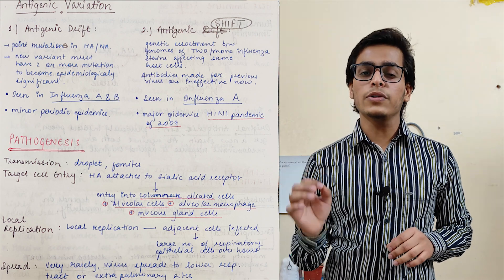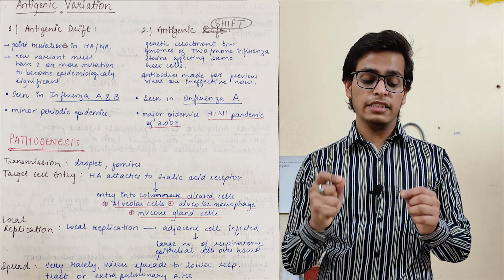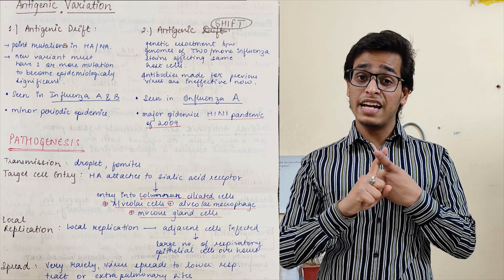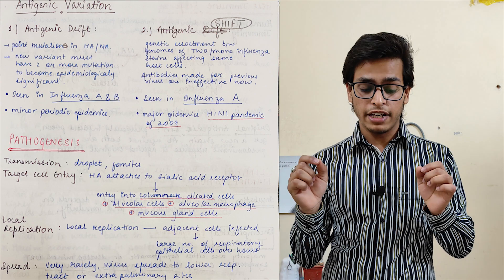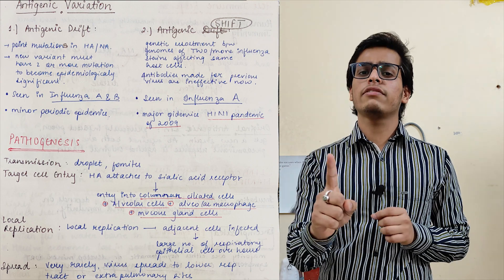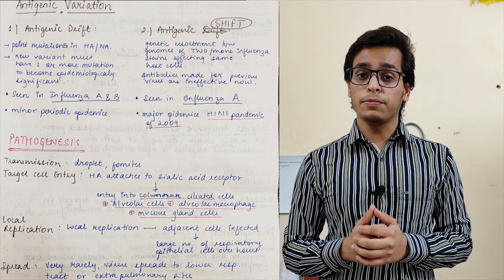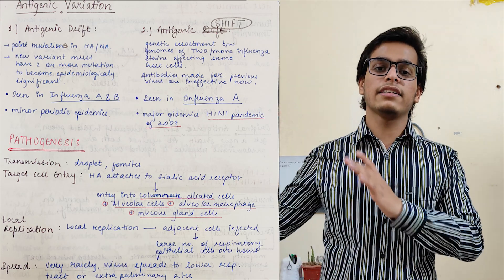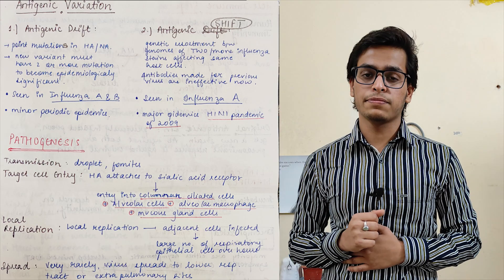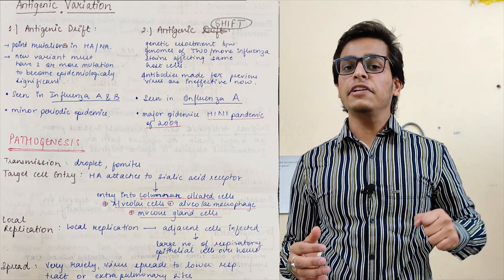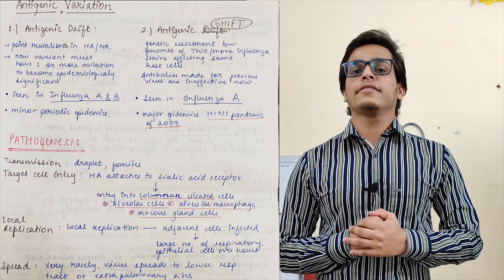A small but important point: antigenic drift is seen in influenza A and B, while antigenic shift is seen only in influenza A. You can also write this down as a difference. Click on the i button and we will discuss this topic further. Thank you so much for listening.